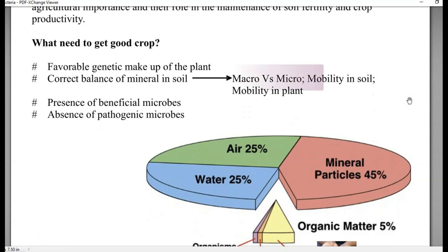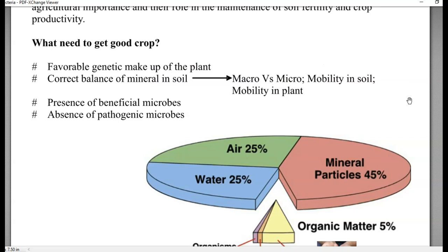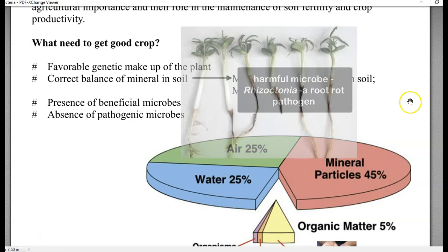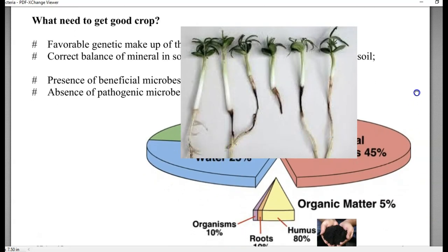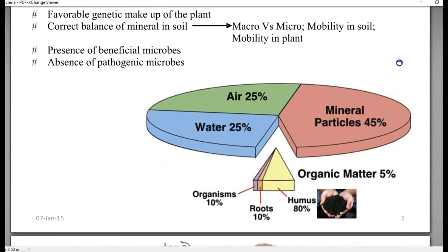The third one is presence of beneficial microbes, microbes that can improve plant growth. Fourth one is absence of pathogenic microbes, microbes that can cause disease on the plant system. Such microbes should not be present in the soil.